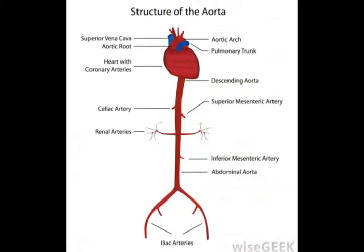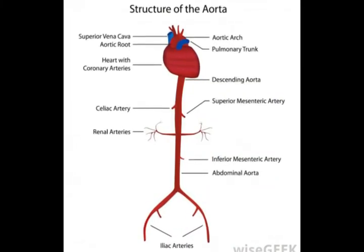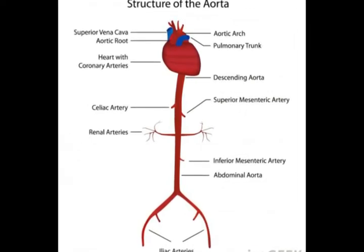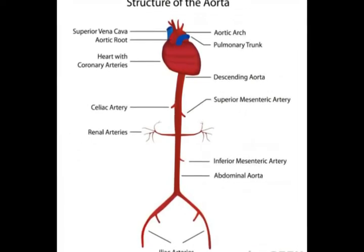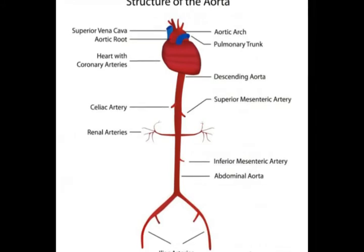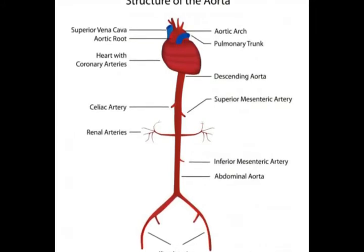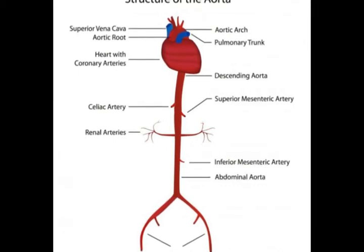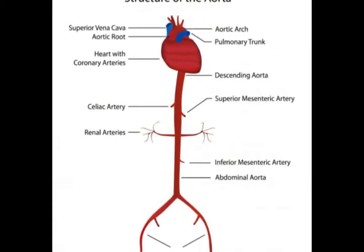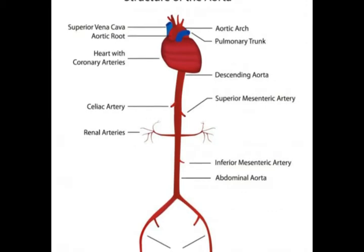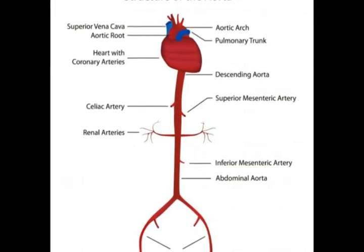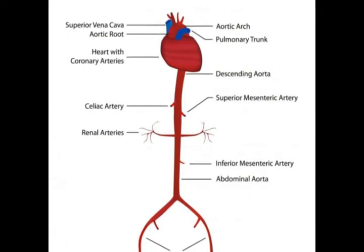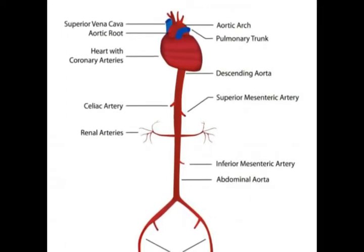An aortic sinus is one of three openings, or dilations, that occurs on the inner wall of the ascending aorta, also called the aortic root. The sinuses serve as critical pathways for the two coronary arteries, which allow proper function of the heart. These arteries supply blood to different parts of the heart, which pumps blood to the rest of the body.